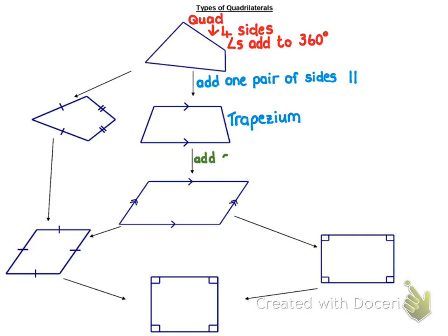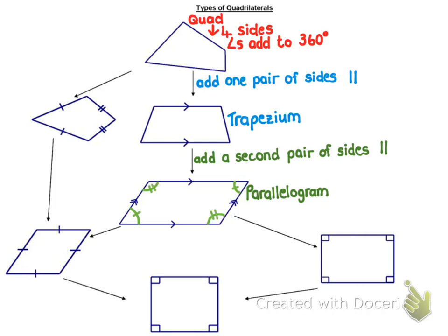Now if we take a trapezium and we add a second pair of parallel sides, you get probably one of the most interesting quadrilaterals, and that is a parallelogram. The way this family tree works is a parallelogram is a type of trapezium, which is a type of quadrilateral. So everything that's true in a quadrilateral and a trapezium is true in a parallelogram, plus extra properties. A parallelogram has both pairs of opposite angles equal, and both pairs of opposite sides equal.